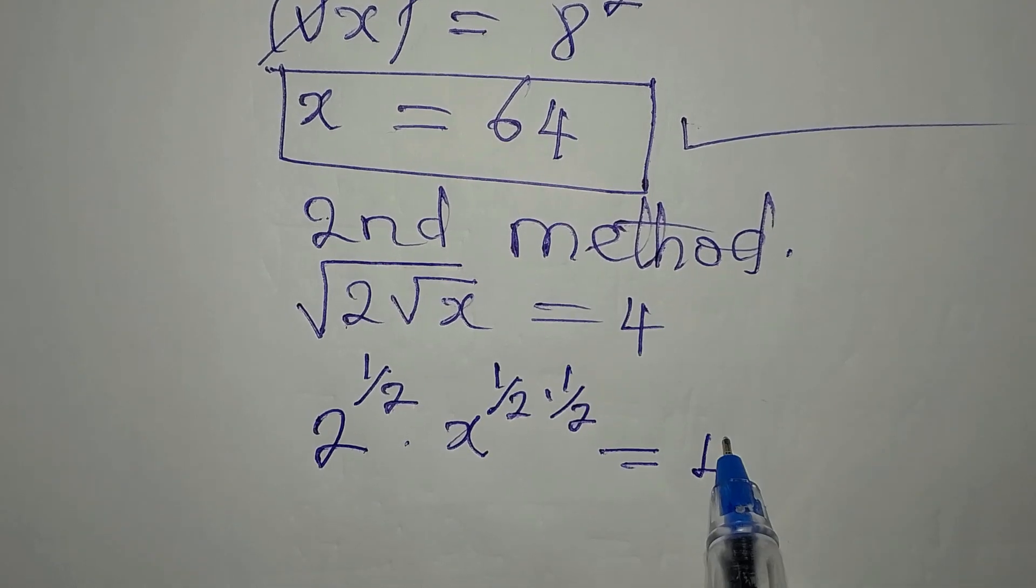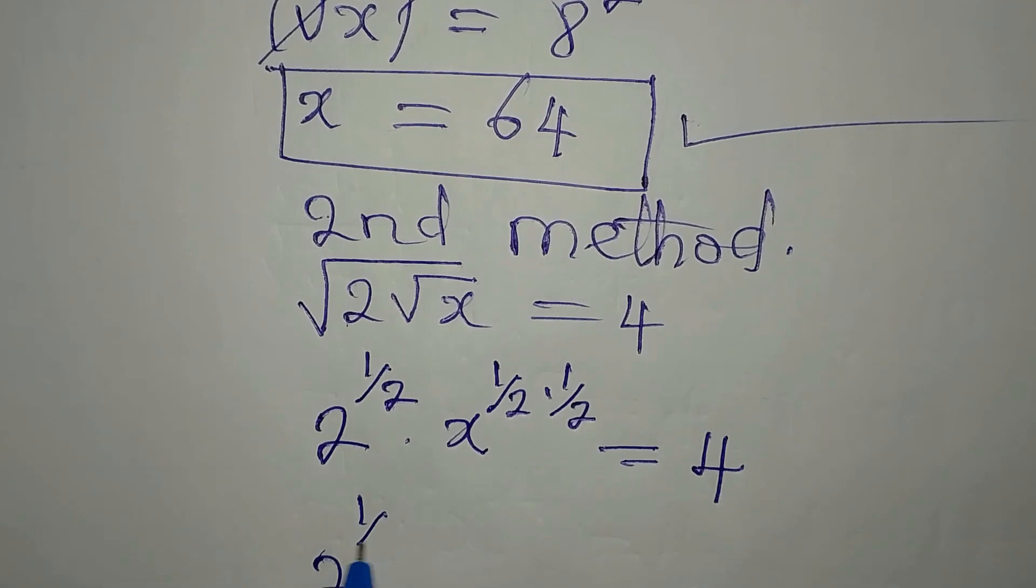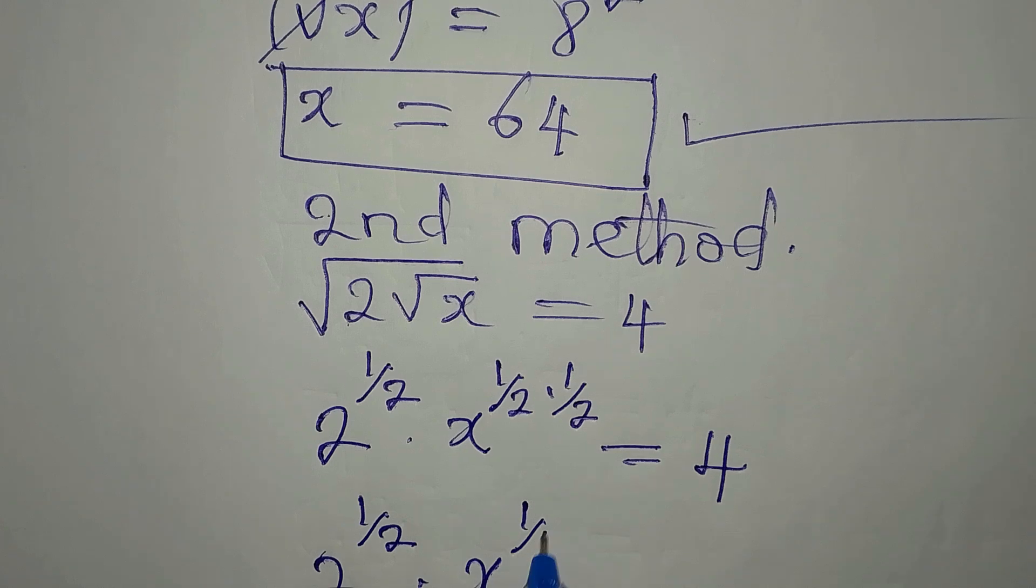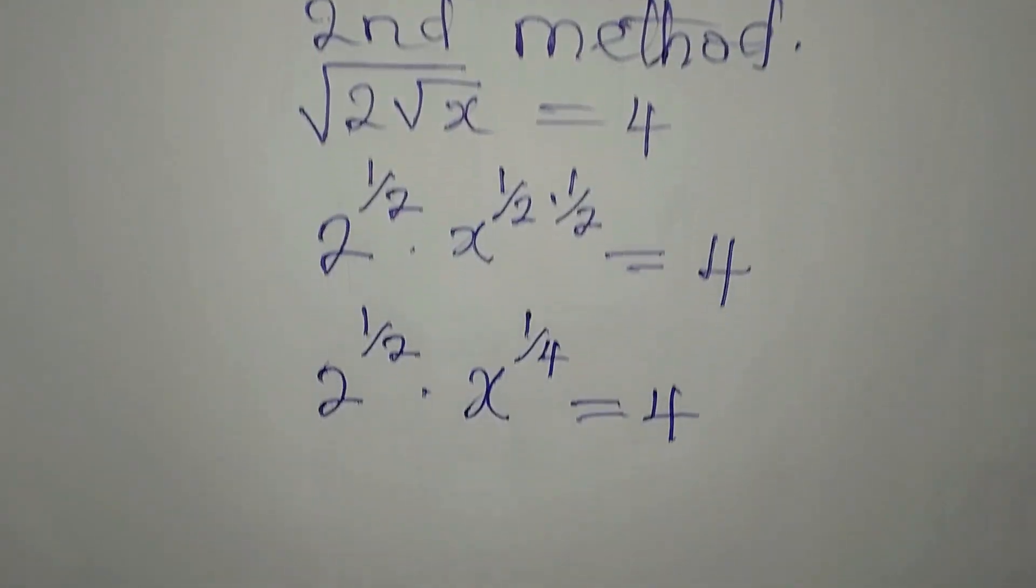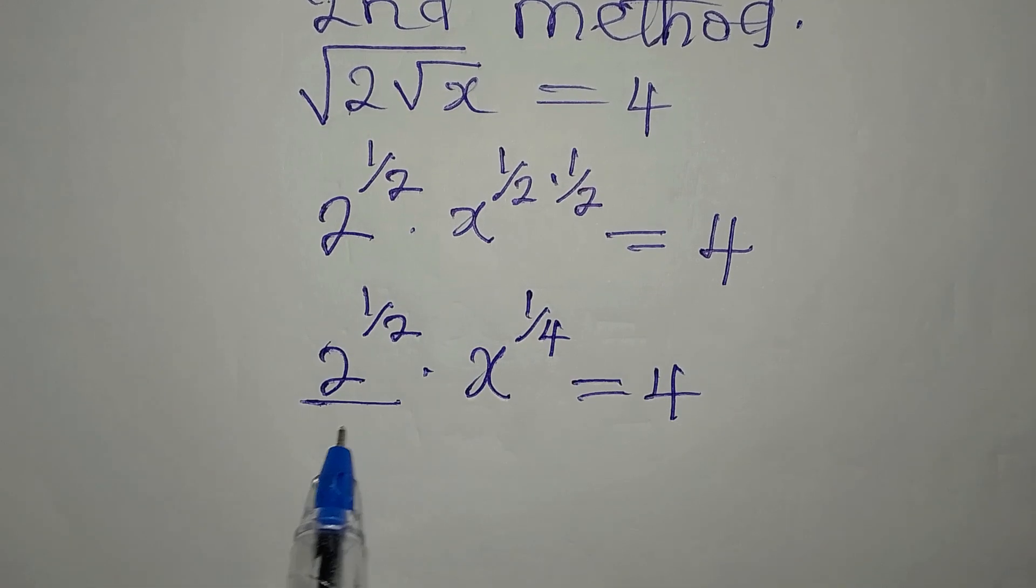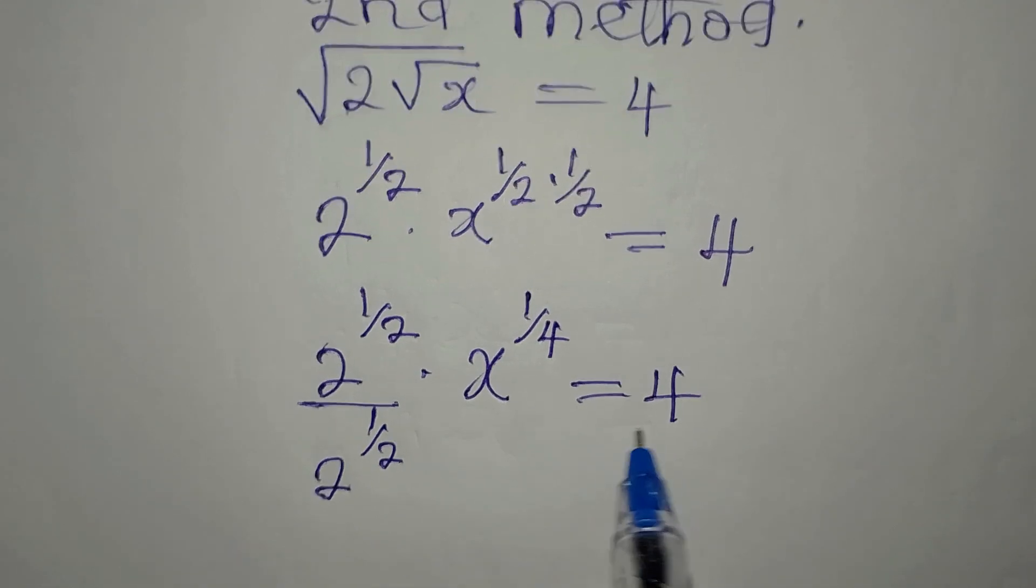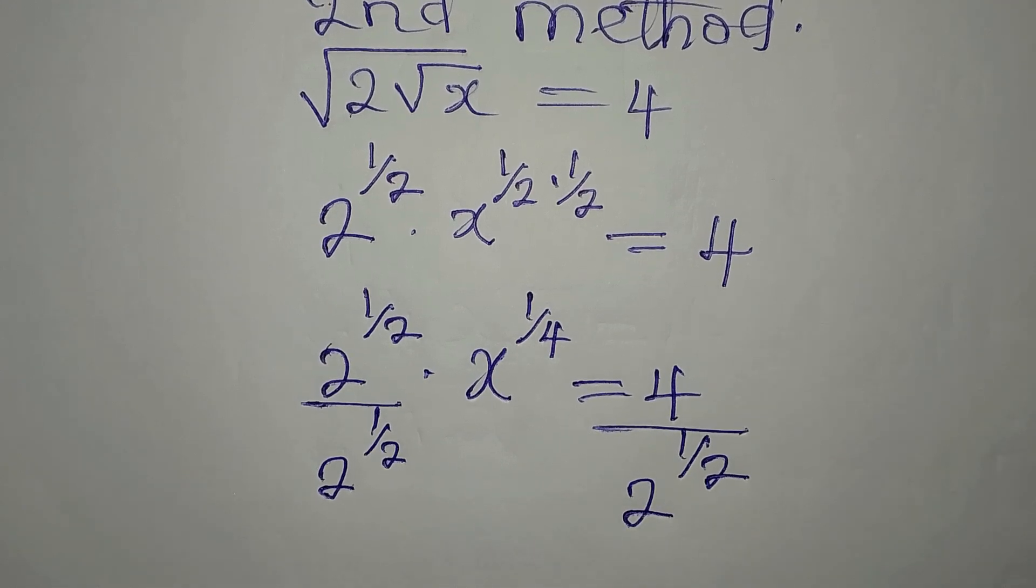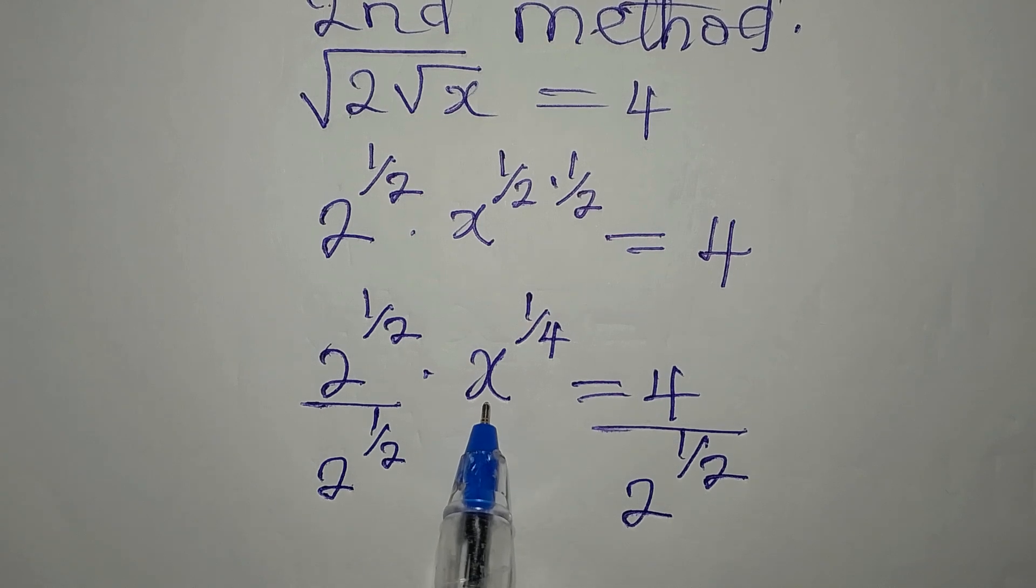Now, 2 to the power of 1 over 2 times x to the power of 1 over 4 is equal to 4. So if this is the case, why don't I remove this as I divide both sides by 2 to the power of 1 over 2. Then this will be divided by 2 to the power of 1 over 2. Now, you'll be thinking, why don't I divide this as well?